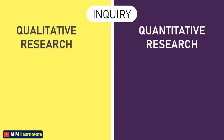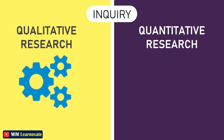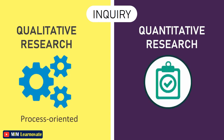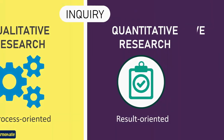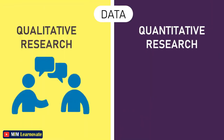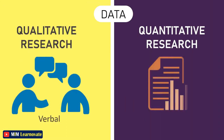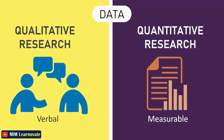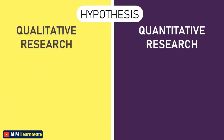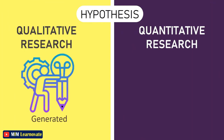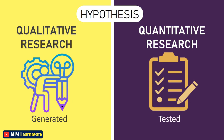Inquiry: in qualitative research the inquiry is process-oriented, whereas in quantitative research the inquiry is result-oriented. Data: in qualitative research, verbal data are collected, while in quantitative research, measurable data is gathered. Hypothesis: in qualitative research, the hypothesis is generated, whereas in quantitative research, the hypothesis is tested.